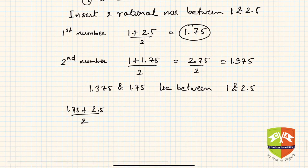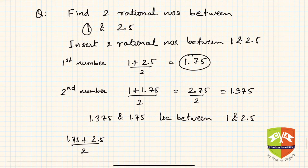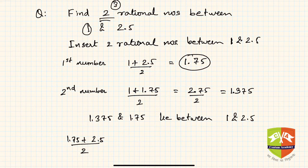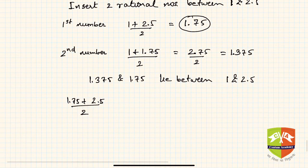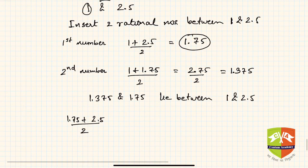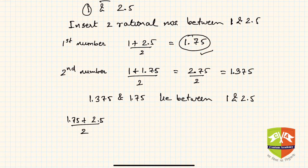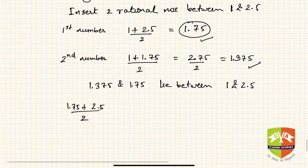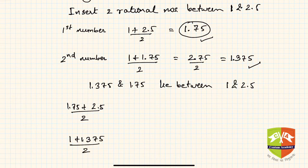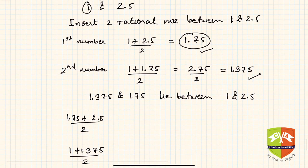If the question asks for 3 numbers, you simply repeat the process three times. For example: first number is 1.75, second is 1.375, then take 1 and 1.375 divided by 2 to get a third number. This is one way of finding as many rational numbers between two given numbers as desired. But is there another method? Yes, there is — an alternate method.